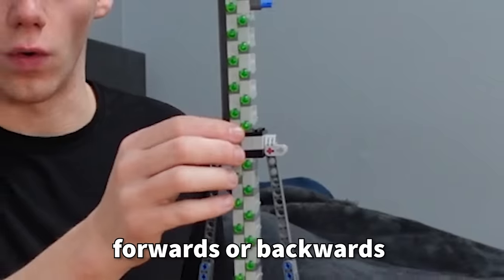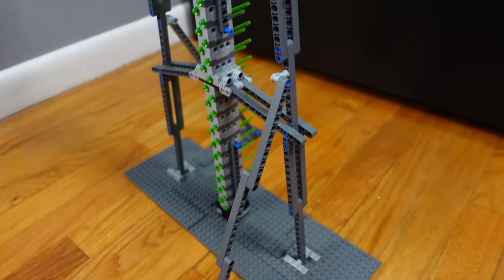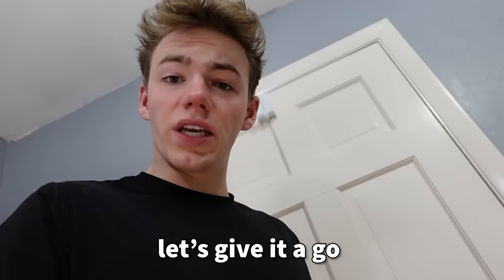We don't have anything to prevent the tower from falling forwards or backwards. So I extended the base to connect one support segment to the front and another one on the back. This should be good now. Let's give it a go. Three, two, one.